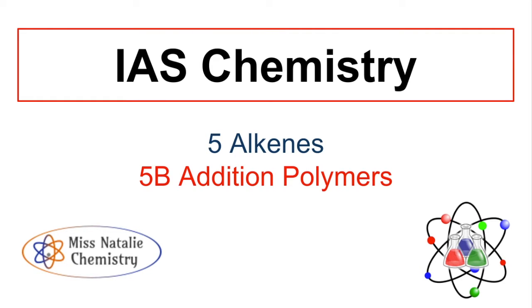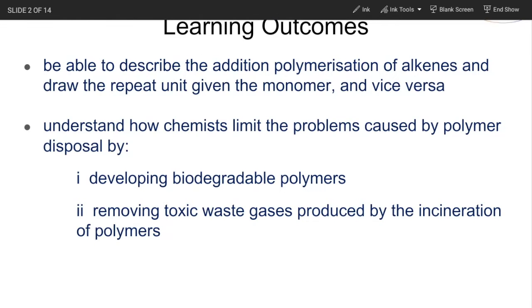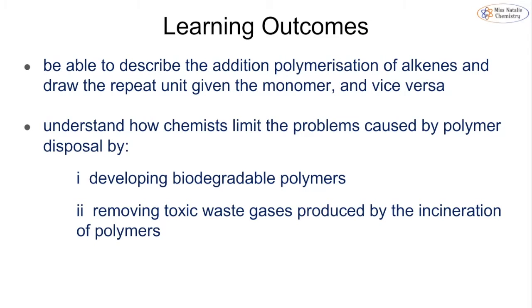In this video we're going to be talking about topic 5b addition polymers, which is the final topic of unit one for the IAS chemistry for Edexcel. We're going to be looking at the addition polymerization of alkenes, how we can draw the repeat unit given the monomer and vice versa, and also look at the issues with polymer disposal and how we can limit these problems.